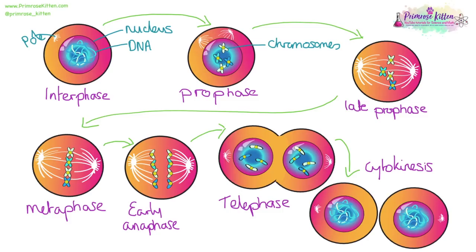In mitosis we go from one parent cell to two identical daughter cells. First, the DNA in the nucleus condenses into chromosomes and they line up down the middle. Once lined up and all checks are done to ensure chromosomes won't go astray, they are pulled apart to either end of the cell. New nuclei form and then the cell separates into two identical daughter cells.